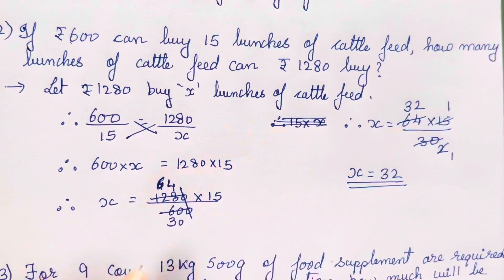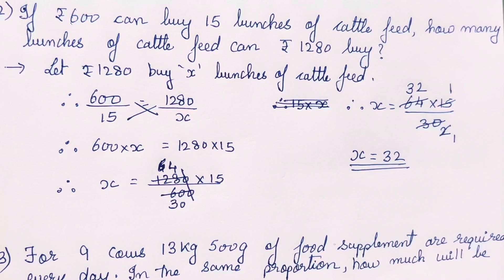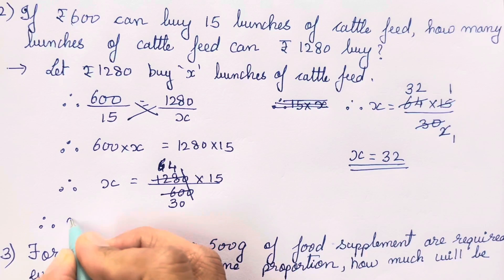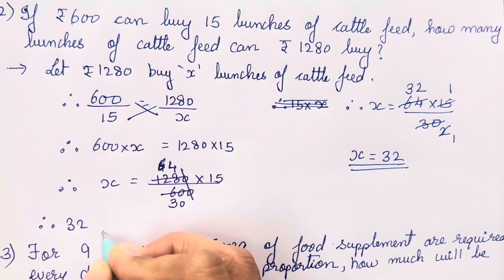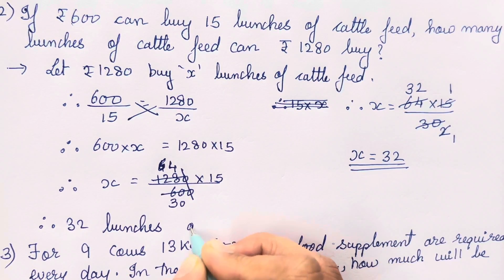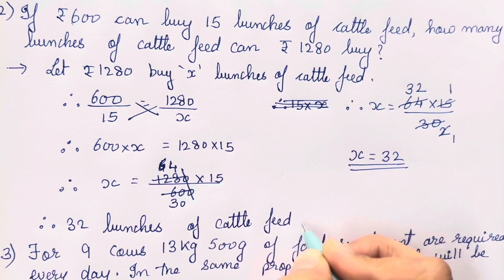You all can repeat this step again and again — watch it again and again so it will be clear, because this will save your time. In future also you will need this type of reduction in maths. So therefore 32 bunches of cattle feed.